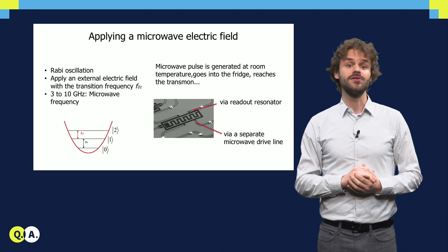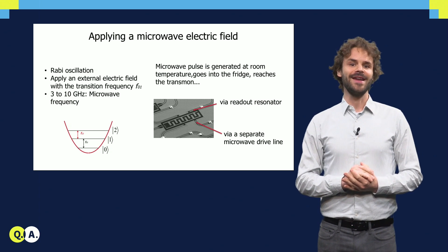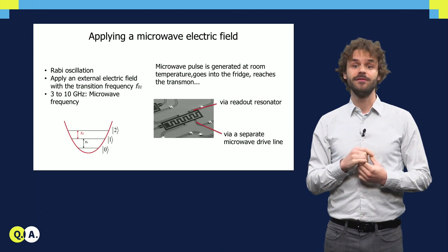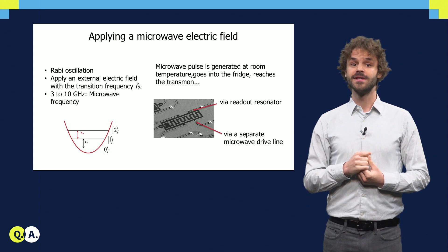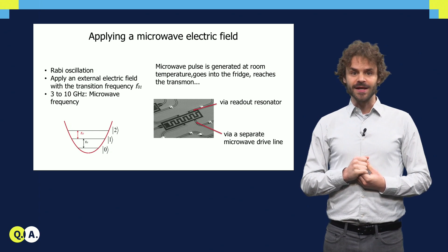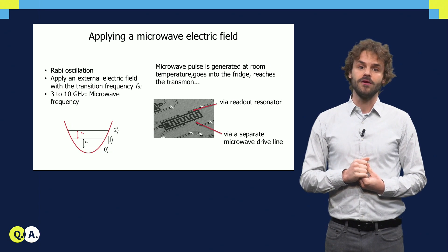We use the physical effect called Rabi oscillation. We change the qubit state by applying an external oscillating electric field at the qubit frequency corresponding to the energy difference between the ground and excited state. That frequency is usually in the microwave range, between 3 and 10 GHz.